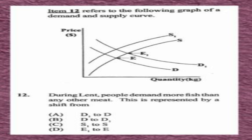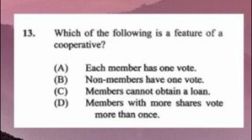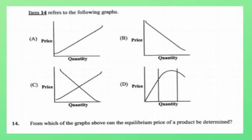Question number twelve refers to a graph of a demand and supply curve. During Lent, people demand more fish than any other meat. This is represented by a shift from A) D1 to D, B) D to D1, C) S1 to S, D) E1 to E. The answer is B, D to D1. Question number thirteen: which of the following is a feature of a cooperative? A) each member has one vote. The answer is A.